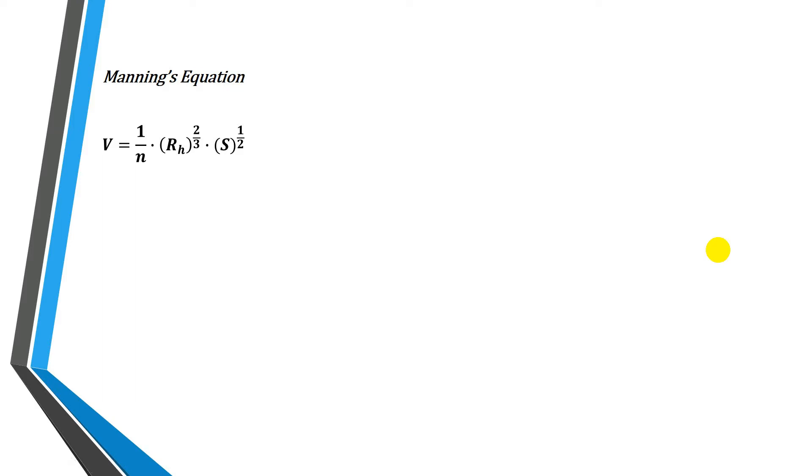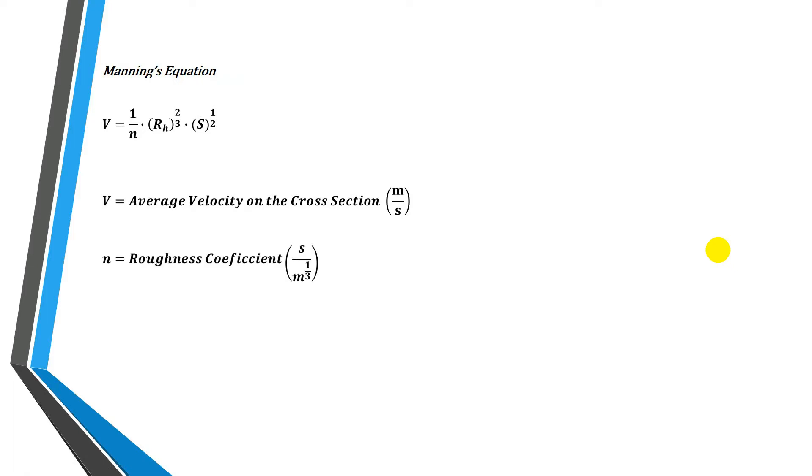This is the Manning's equation, where V is the average velocity on the cross-section, its units are meters per second. N is the roughness coefficient, usually taken as dimensionless, but the units are seconds divided by meters powered to one-third.